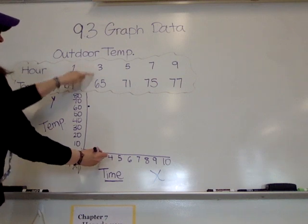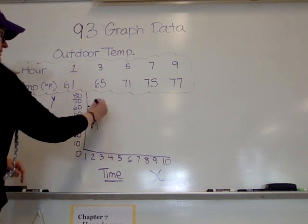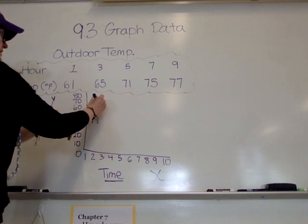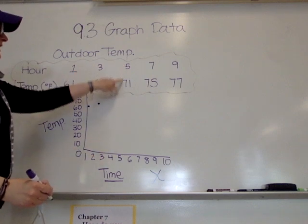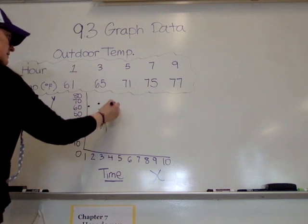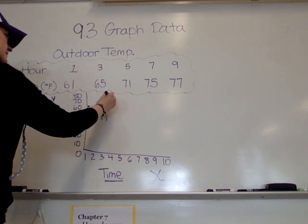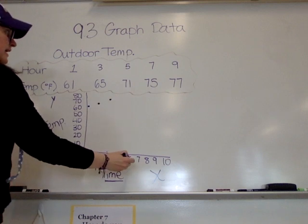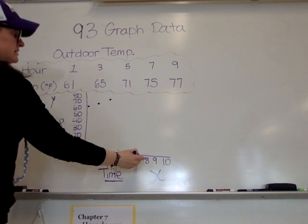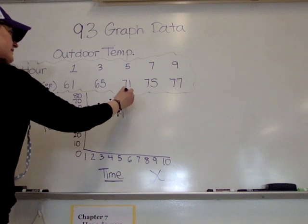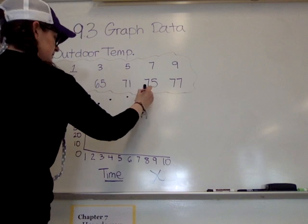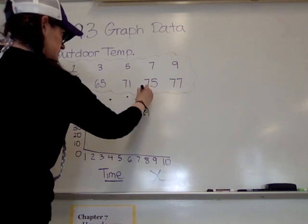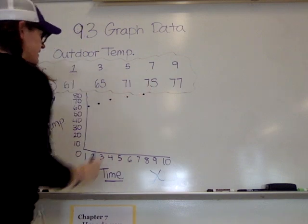Hour 3 is at 65. So obviously it's going to be a little bit higher than your first dot in between 60 and 70. Hour 5 is at 71, just above your 70. And hour 7 is at 75. Again, above that. And hour 9, 77 is just slightly above that last line there.